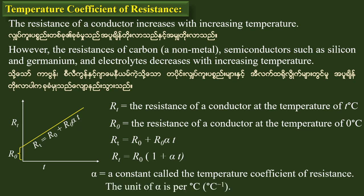The unit of alpha is per degree Celsius. If you look at the temperature of 10 degrees Celsius, you can see the temperature dependence.